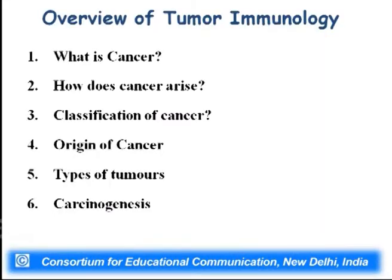Today we shall talk on tumor immunology. We have spoken about immunology and understood all the kinds of cells which are present and fight against diseases, and we will progress into tumor immunology. The topics I am going to cover are: what is cancer, how cancer arises, what causes cancer, classification of cancer, types of tumors — benign and malignant — carcinogenesis, immune surveillance or cancer immuno-editing, and key concepts for tumor immunotherapy.